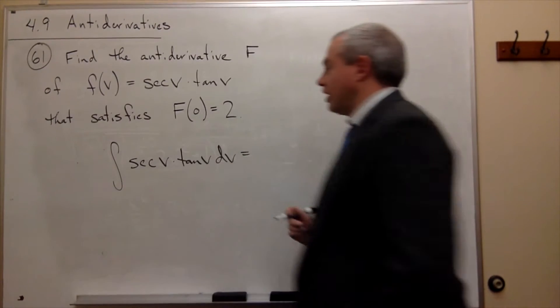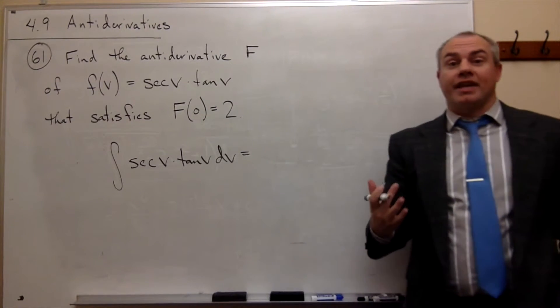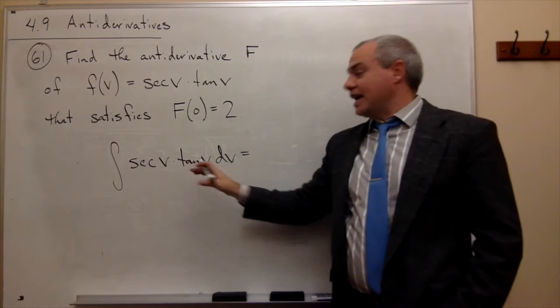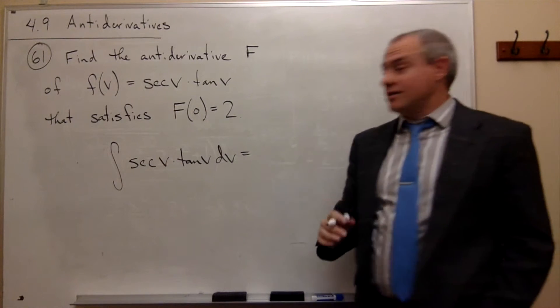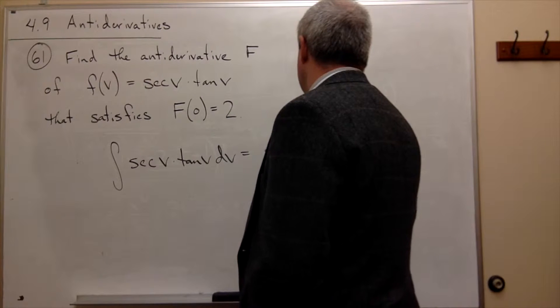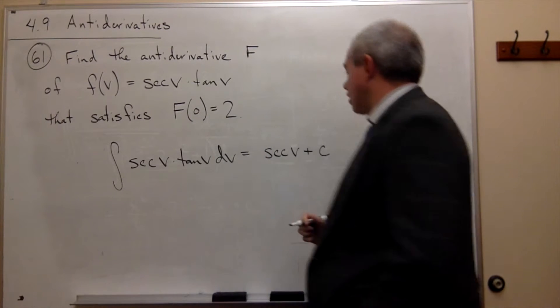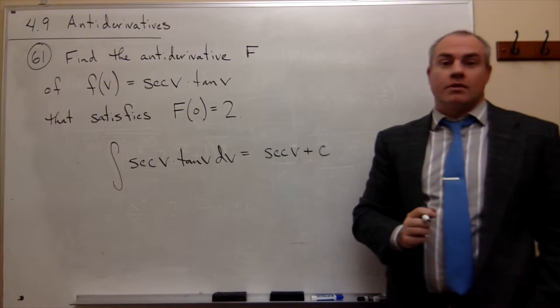Fortunately, that's relatively easy. We know what the antiderivative of sec v tan v is. It is sec v plus the constant.